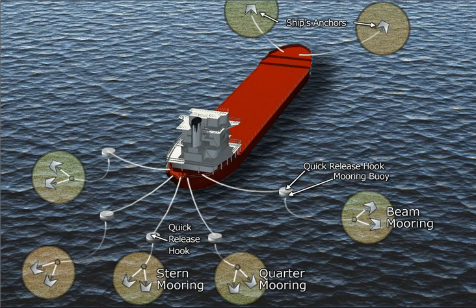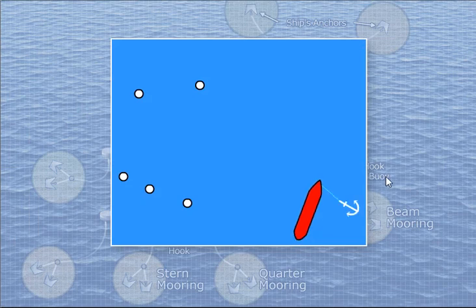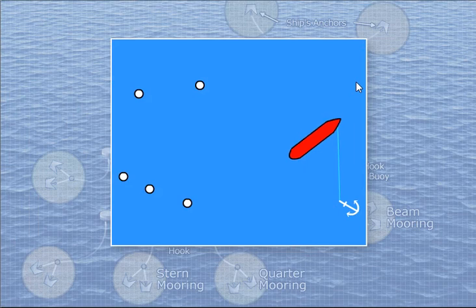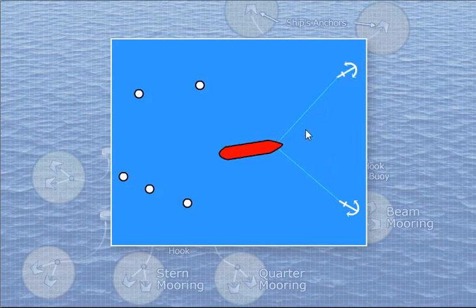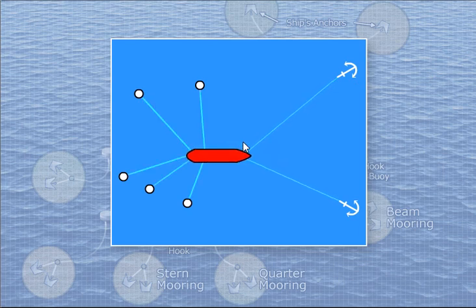Another method of mooring is multi-buoy mooring, or MBM. In this method, the vessel first drops anchor one, then drops anchor two, moves ahead, and then positions against both bow and stern currents.